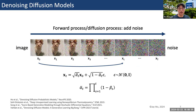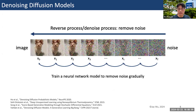A nice property of the above forward process is that we can sample X-T at any arbitrary time step in closed form using the reparameterization trick. For the reverse process, all we need to do is train a neural network to predict the noise and remove it gradually.